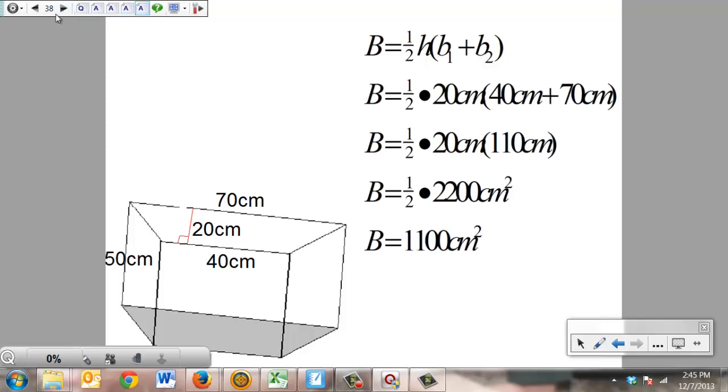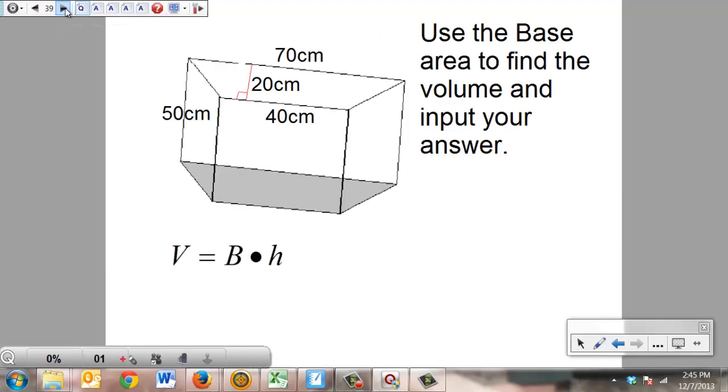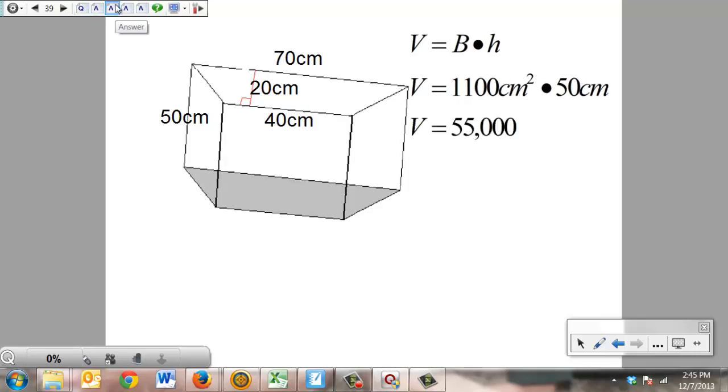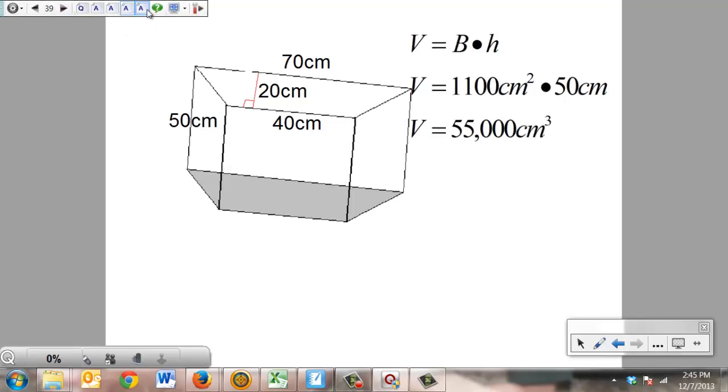Now that we have a base area, we can plug it into the volume formula. Volume is equal to base area times height. Volume is equal to 1,100 centimeters squared times 50 centimeters. 1,100 times 50 is 55,000, and centimeters squared times centimeter is centimeter cubed. Circle your answer. Easy math. Anybody can do this stuff. Just takes a little bit of time.